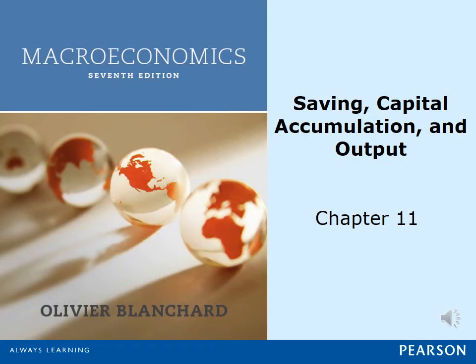Chapter 11: Saving, Capital Accumulation, and Output. This chapter focuses on the role of capital accumulation in growth. It shows that capital accumulation cannot by itself sustain growth, but that it does affect the level of output. A higher saving rate typically leads to lower consumption initially but to more consumption in the long run.